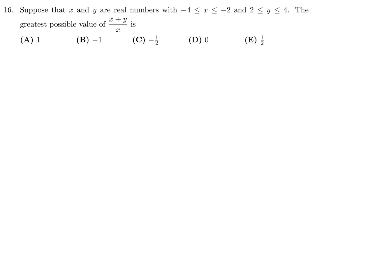Suppose that x and y are real numbers. X is between negative 4 and negative 2 inclusive. Y is between 2 and 4 inclusive. The greatest possible value of x plus y over x is. x plus y over x. Well, first break it up into x over x plus y over x. That's going to give me 1 plus y over x. Now, at this point, since there are not that many, let's just make a table. They're saying real numbers. It could be anything. But, I'm going to treat them as integers.